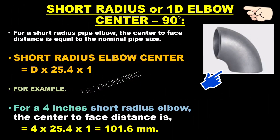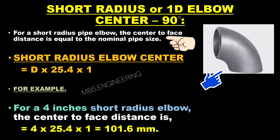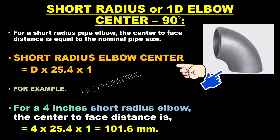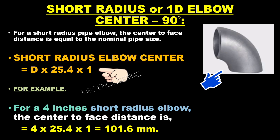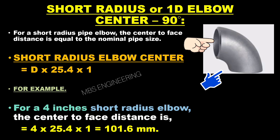Next, we will calculate the elbow pipe center for short type or 1D elbow at 90 degrees. For a short radius pipe elbow, the center-to-face distance is equal to the nominal pipe size. The formula is: Short Radius Elbow Center = D × 25.4 × 1, where D is the diameter of the elbow in inches.